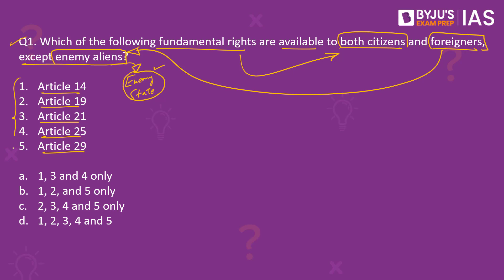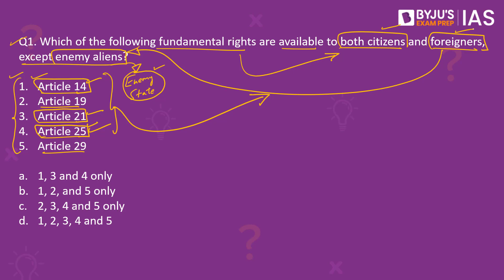So even foreigners enjoy certain fundamental rights as long as they do not fall under the definition of enemy aliens. Amongst the fundamental rights mentioned, Article 14, 21, and 25 are available to both citizens and foreigners — that is, right to equality and equal treatment before law under Article 14, right to life under Article 21, and right to freedom of religion under Article 25. So option A is the right answer.